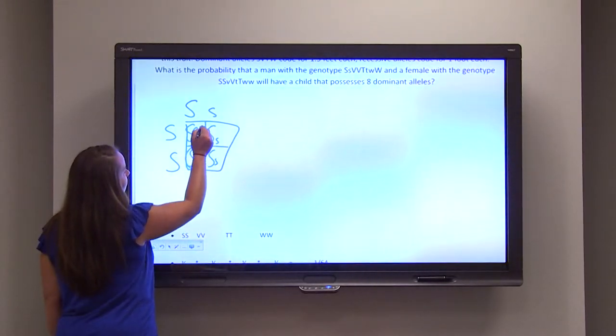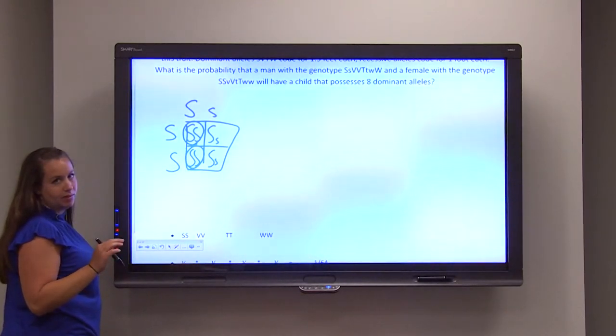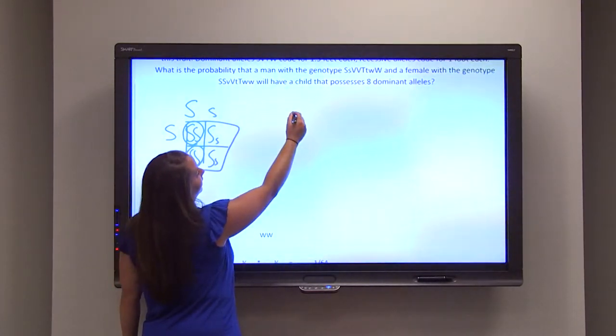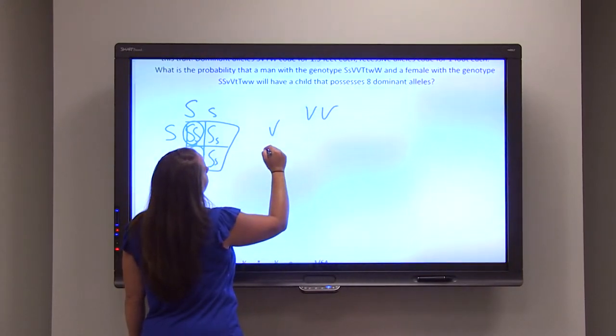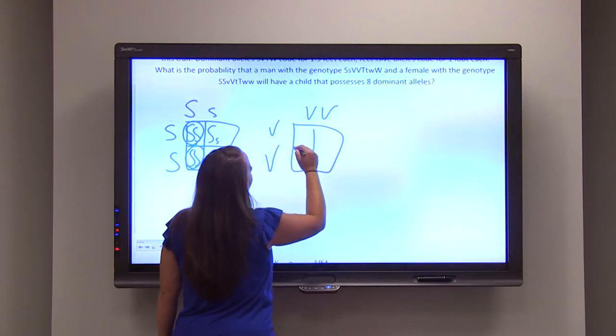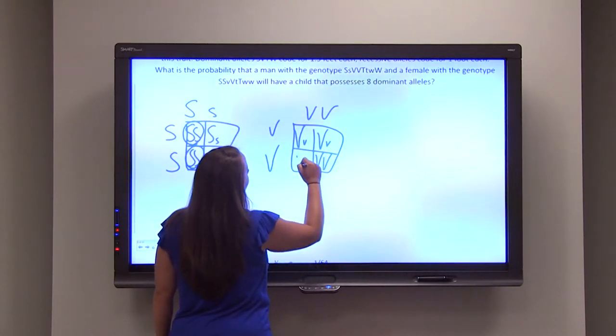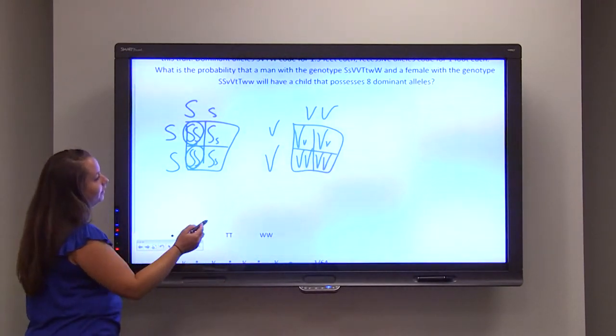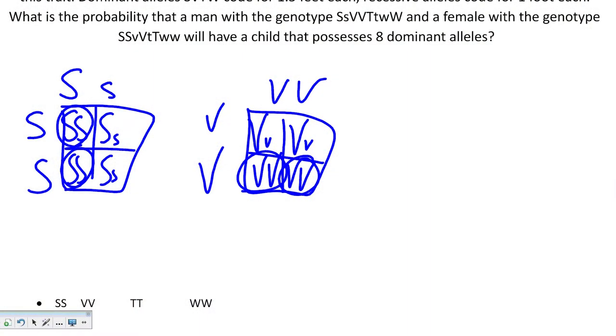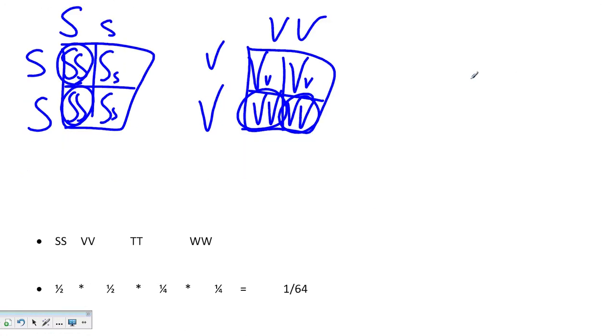We then look at the next allele, capital V. We're going to look at those together. Once again, a one-half chance that we will have dominant alleles. Continue this on, same idea with the T and the W alleles. When we continue this on, we see one-half probability for S, one-half for V, one-fourth with T, and one-fourth with W.